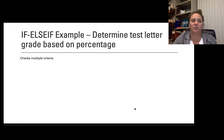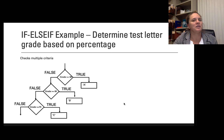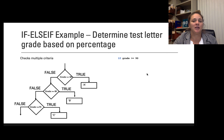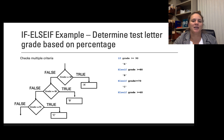In this example, I'm going to determine the test letter grade based on the percentage, following the normal scale of 90 and above as an A, 80 and above as a B, etc. I ask if the grade is greater than or equal to 90 — if true, assign A. If false, ask if grade is greater than or equal to 80 — if true, assign B. If false, ask if greater than or equal to 70 — if true, a C, and so on. In code: if grade >= 90, A; else if grade >= 80, B; else if grade >= 70, C; else if grade >= 60, D; else F; end.